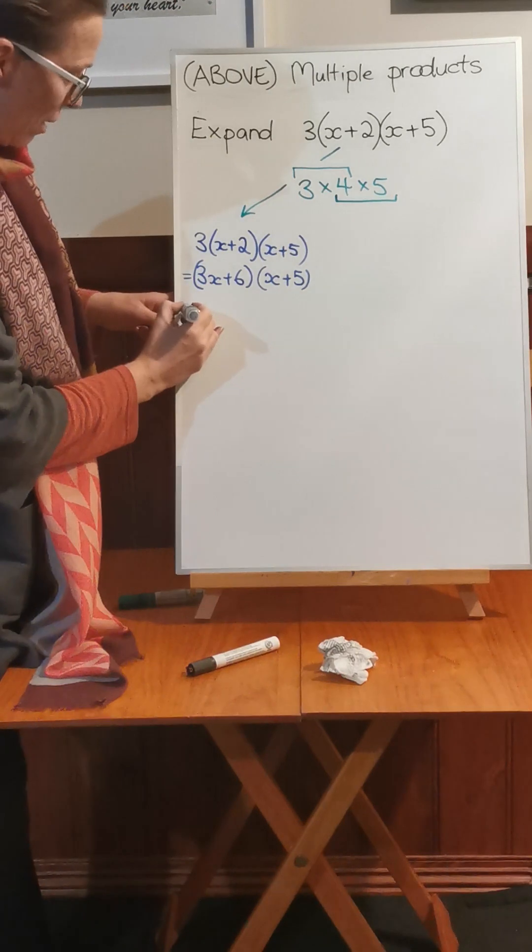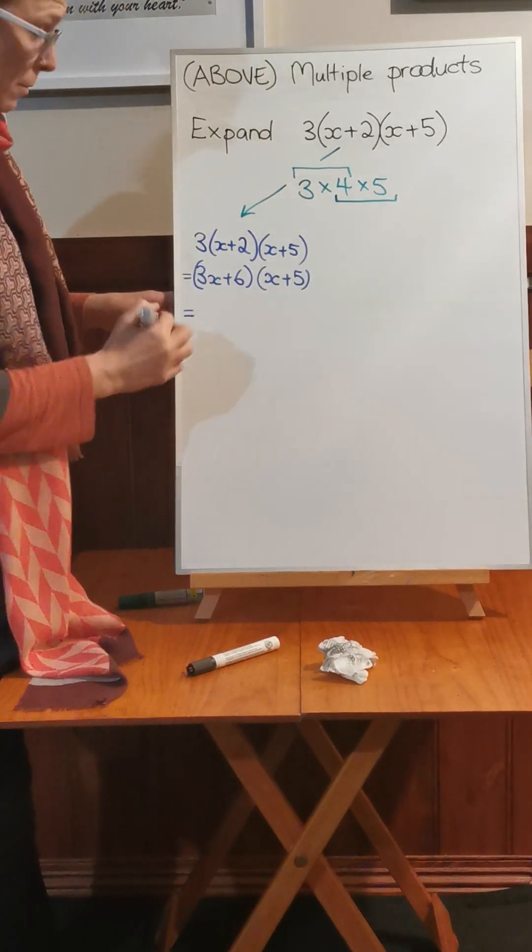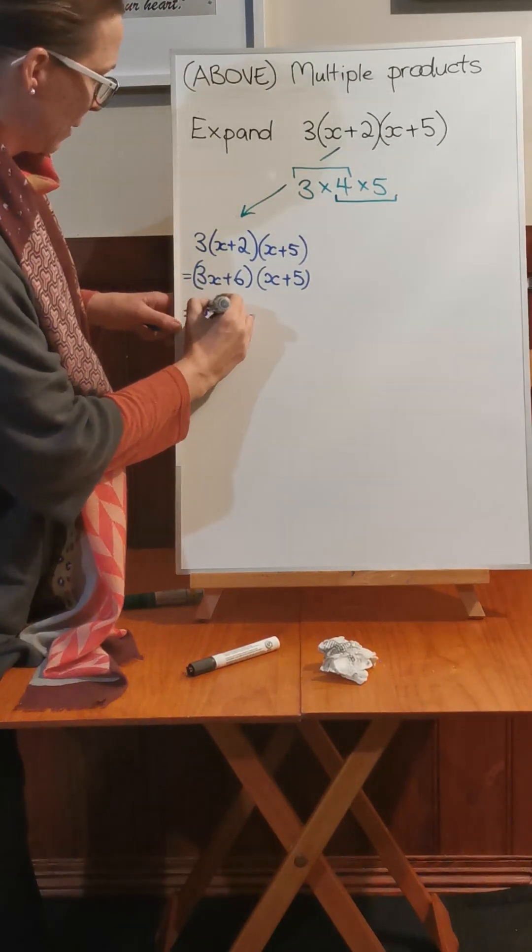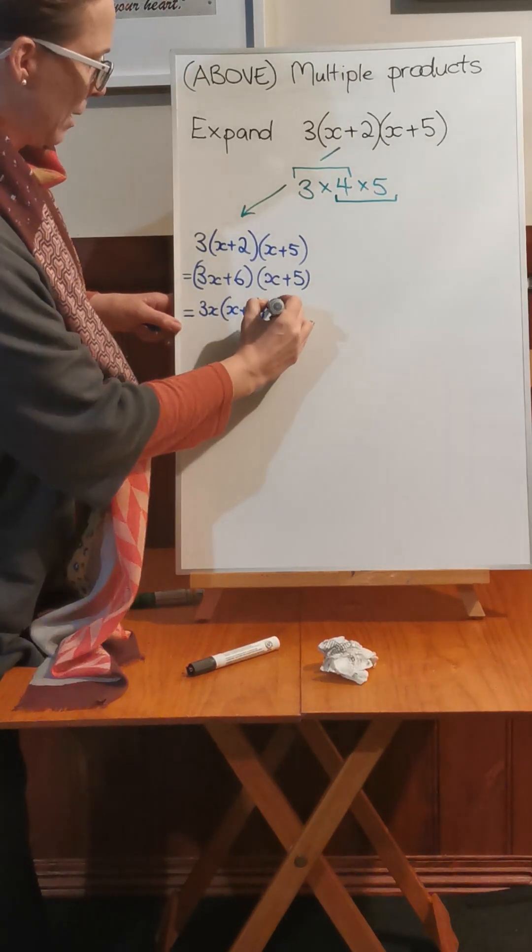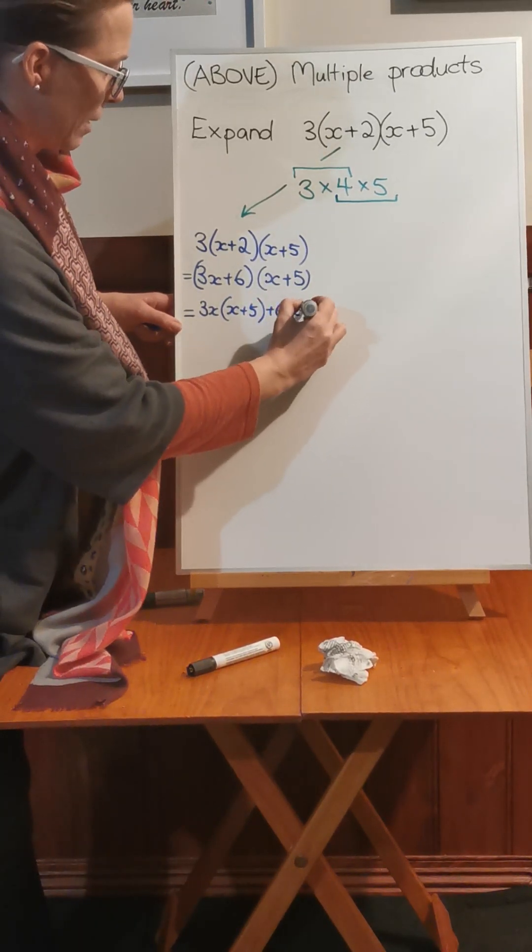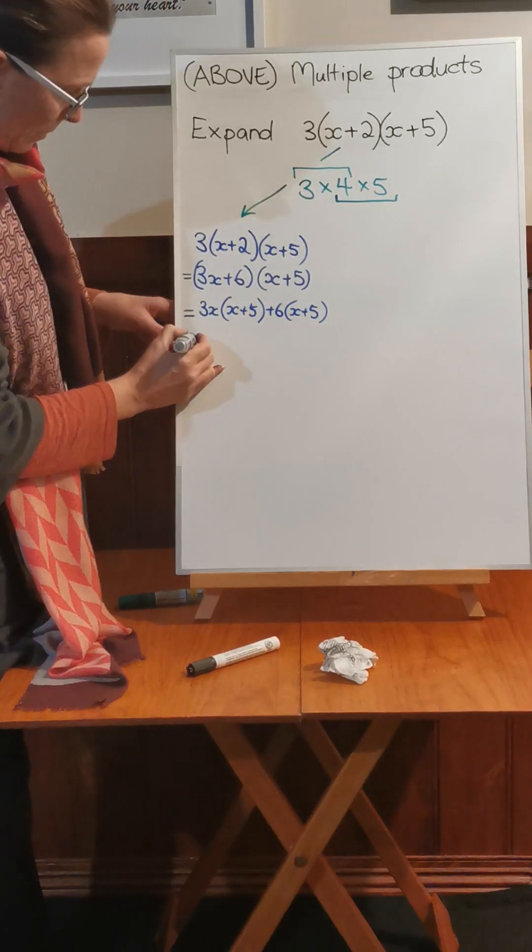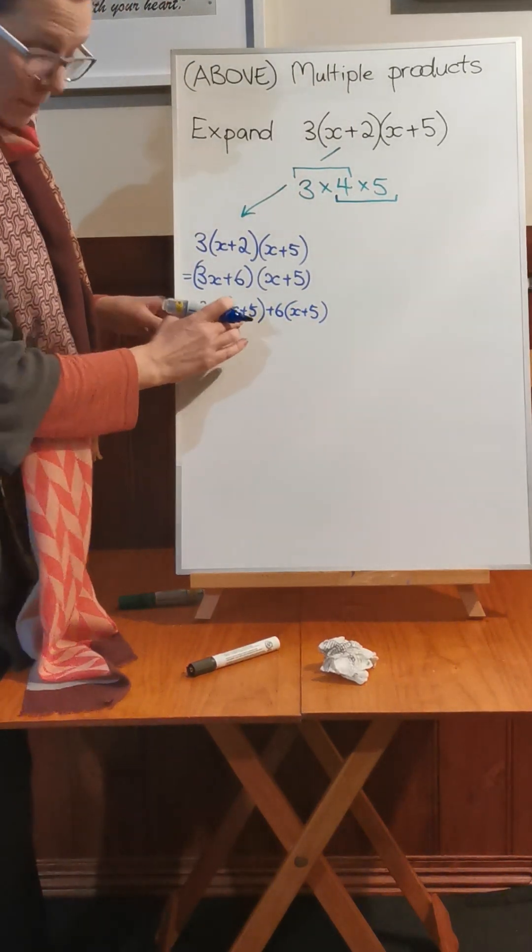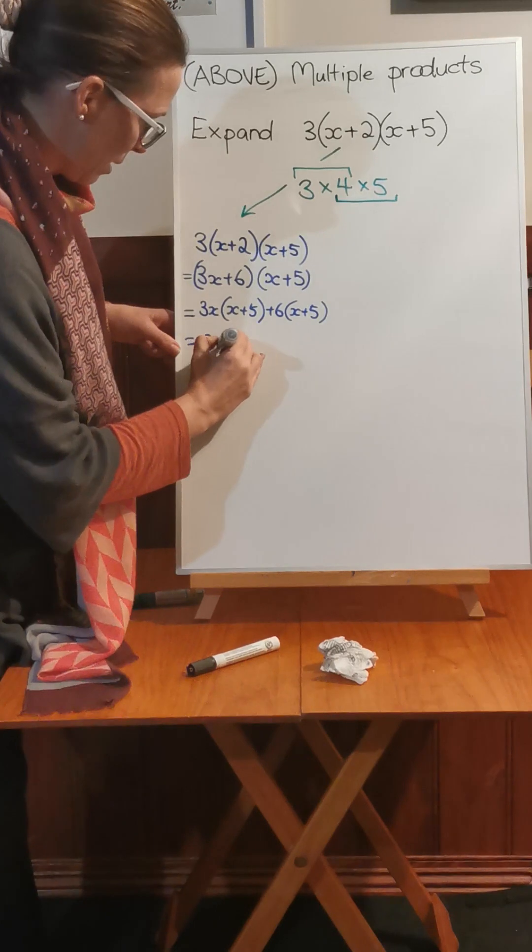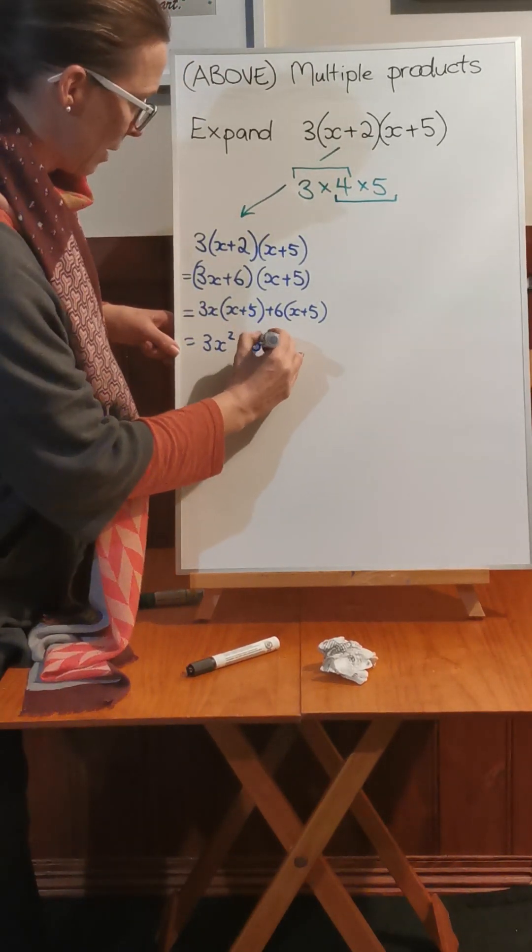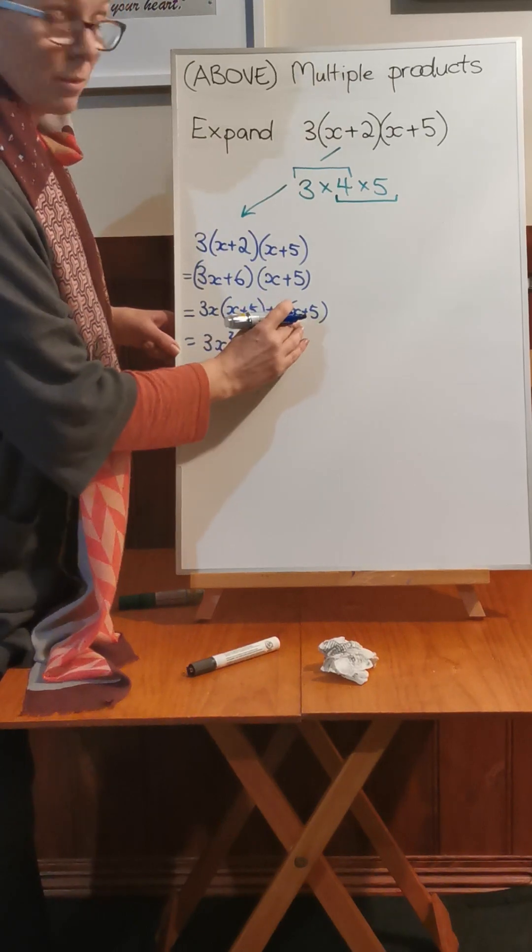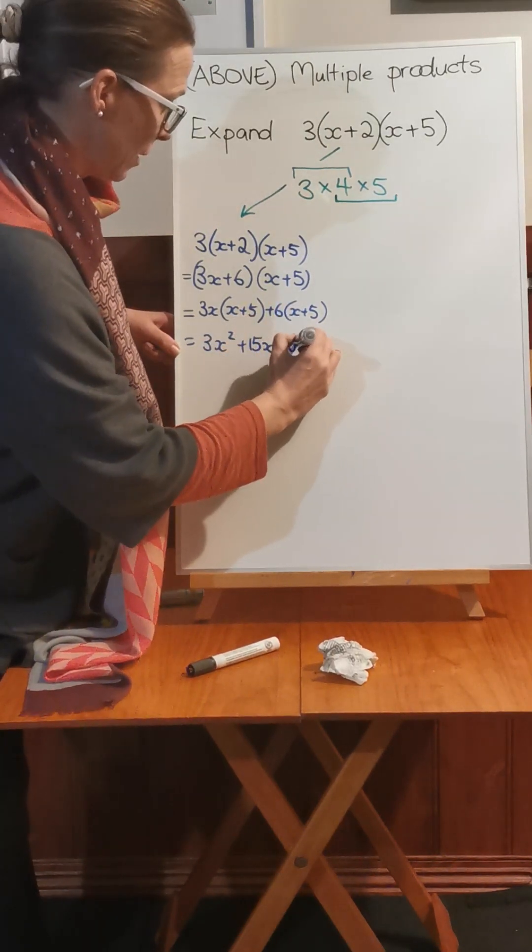Now we can go into our binomial distribution. So 3x times x plus 5 plus 6 times x plus 5. 3x times x is 3x squared. 3x times 5 is 15x. Positive 6 times x is positive 6x, and 6 times 5 is positive 30.